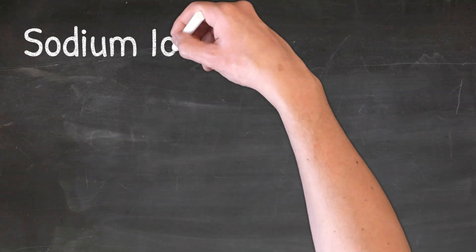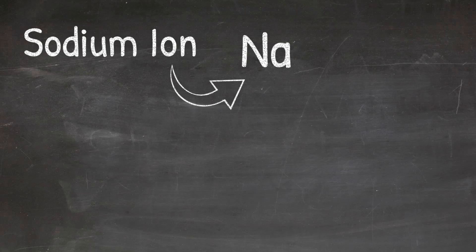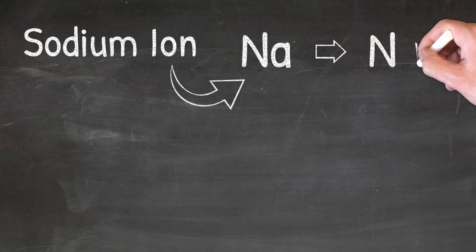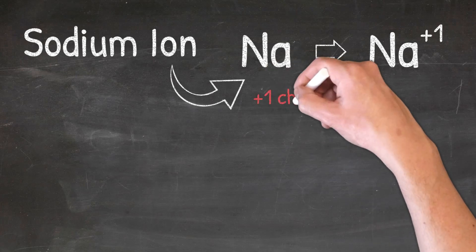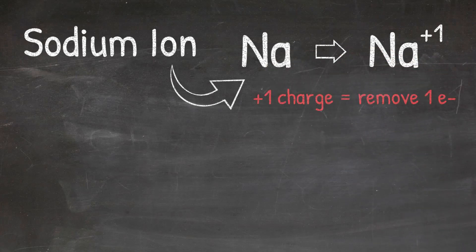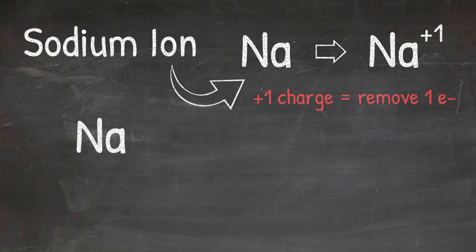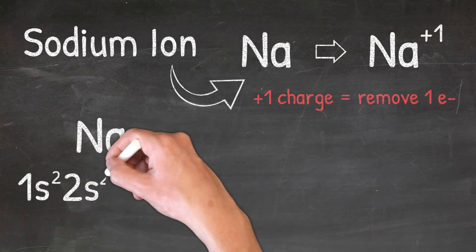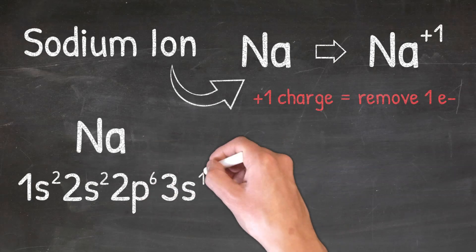The first example we will look at is the sodium ion. When sodium becomes an ion it is going to have a plus one charge. So remember, because it has a positive charge, that means we remove one electron. Let's start by writing the electron configuration for the sodium atom: 1s2, 2s2, 2p6, 3s1.